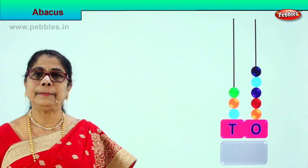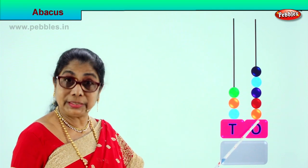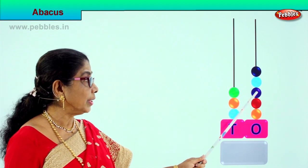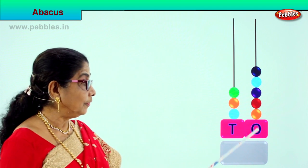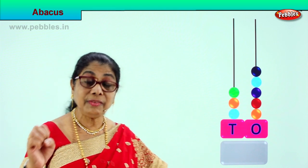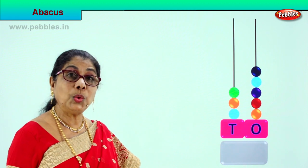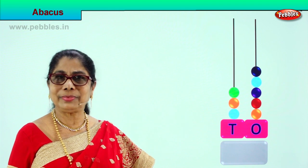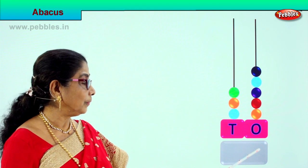Look at what we have here. Let's count the ones first. The first rod has 1, 2, 3, 4, 5 beads — that is 5 ones. So in the ones place we write the number 5. 5 ones — got it? We write here 5 ones: 5.